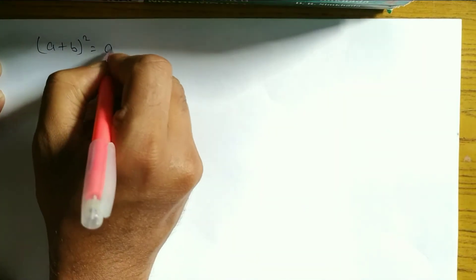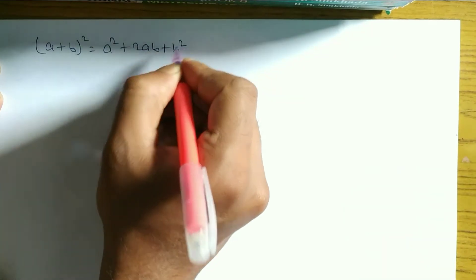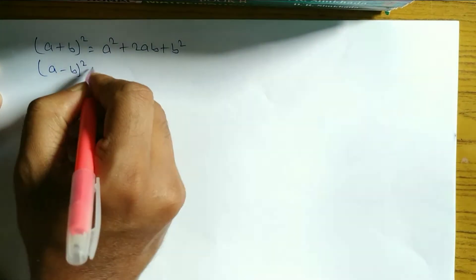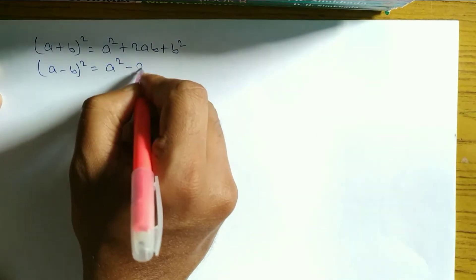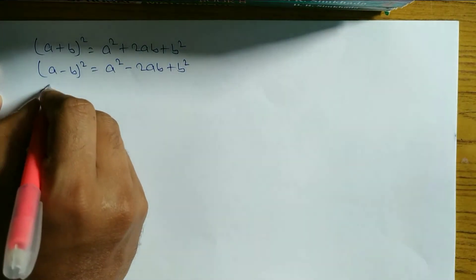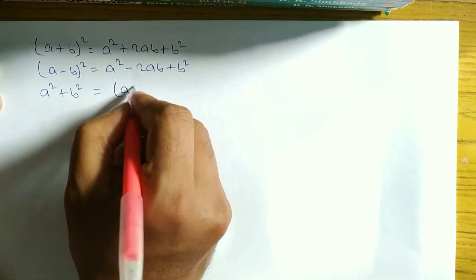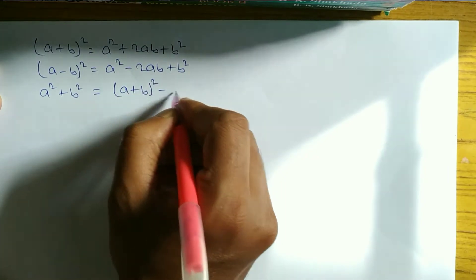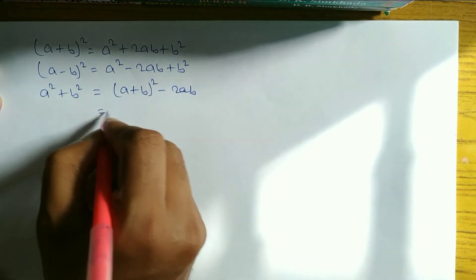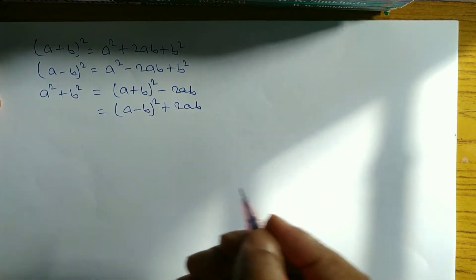This first set is for the previous exercise. A plus B whole square is equal to A square plus 2AB plus B square. Similarly, A minus B whole square is equal to A square minus 2AB plus B square. For A square plus B square, we have two formulas: one is A plus B whole square minus 2AB, and another is A minus B whole square plus 2AB. We use them according to the condition.